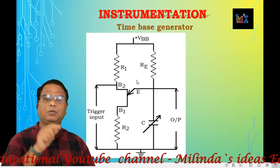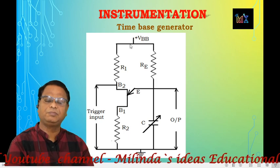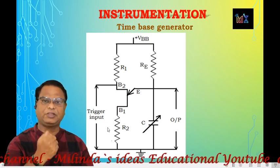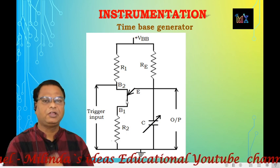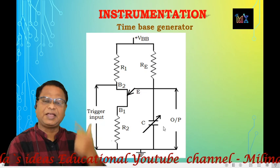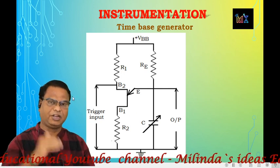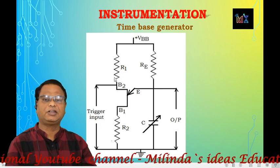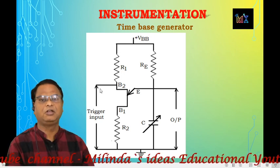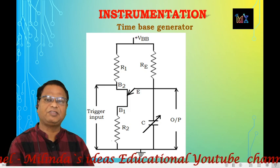The UJT has terminals: base 2, base 1, and emitter. Base 2 is connected to plus VBB through resistor R1. Base 1 is connected to the ground terminal through resistor R2. The emitter is connected to plus VBB and also to the ground terminal through a capacitor. The output of the trigger circuit is connected to the base 2 terminal to give a pulse so that the time-base generator starts its sweep.